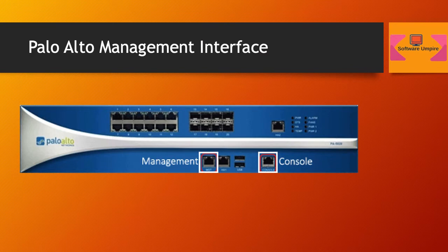Palo Alto Networks next generation firewalls can be accessed by either an out-of-band management port labeled as MGT or a serial console port. By using the MGT port we can separate the management functions of the firewall from the data processing functions. All initial configurations must be performed either on the out-of-band management interface or by using a serial console port.